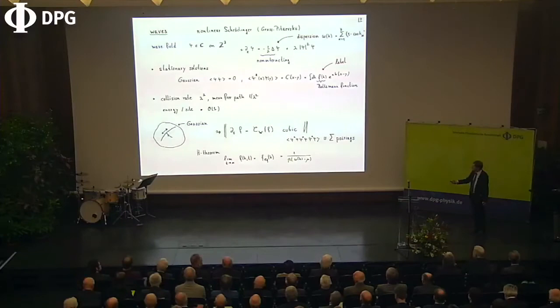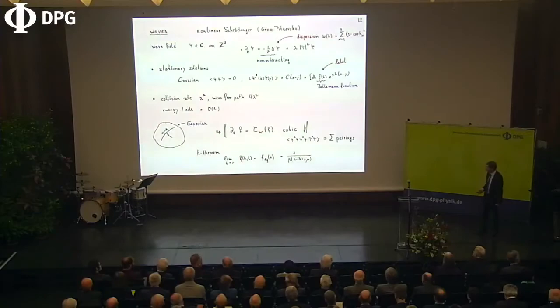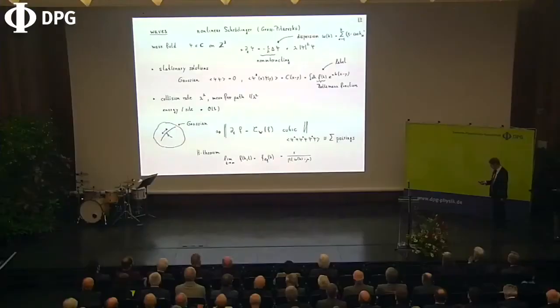You get a kinetic equation, which is slightly different in structure — it's cubic. The reason it's cubic is a pairing rule giving three pairs. You can prove an H-theorem, and in the long-time limit you actually converge to a Rayleigh-Jeans distribution — the high-temperature limit of the Boltzmann distribution.